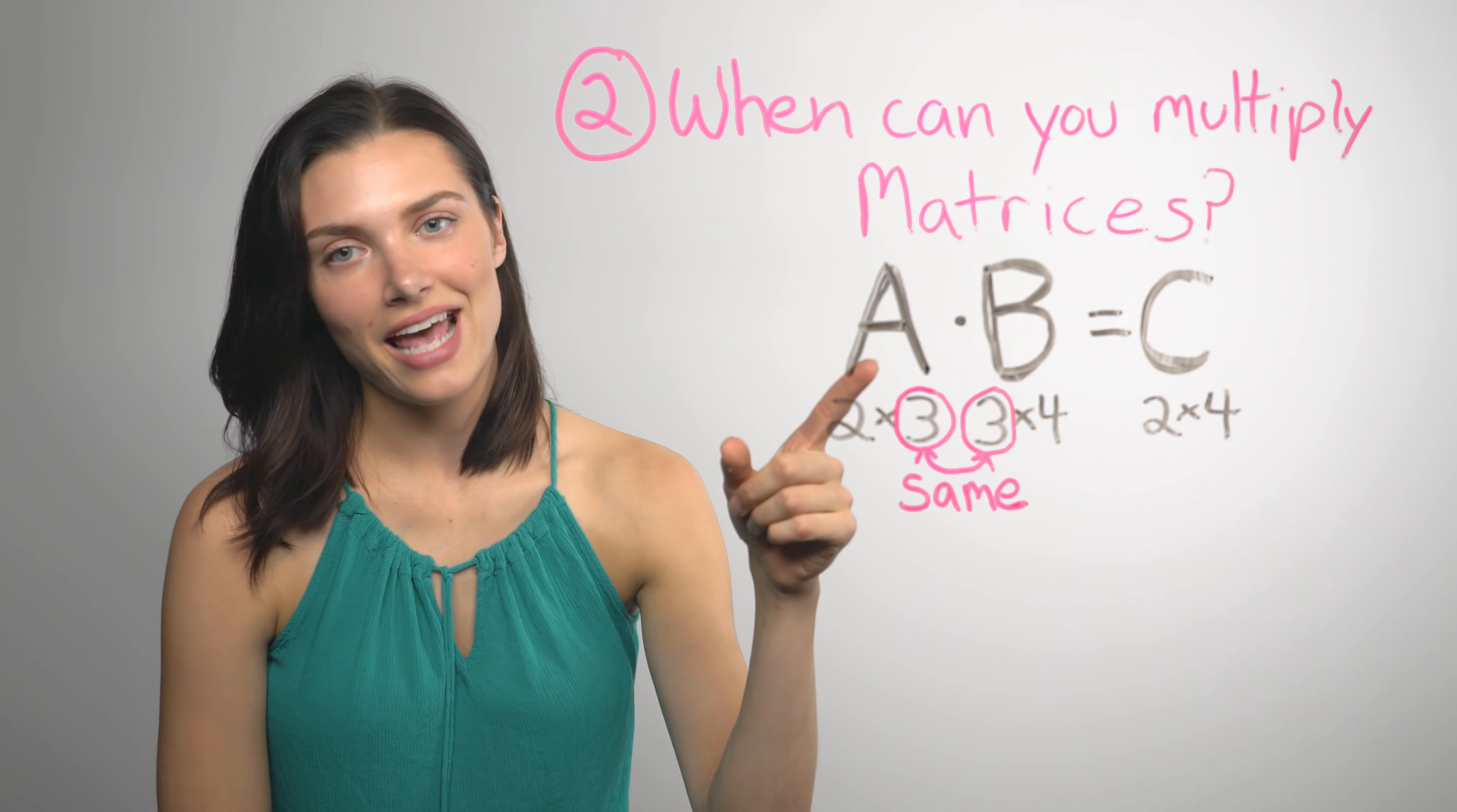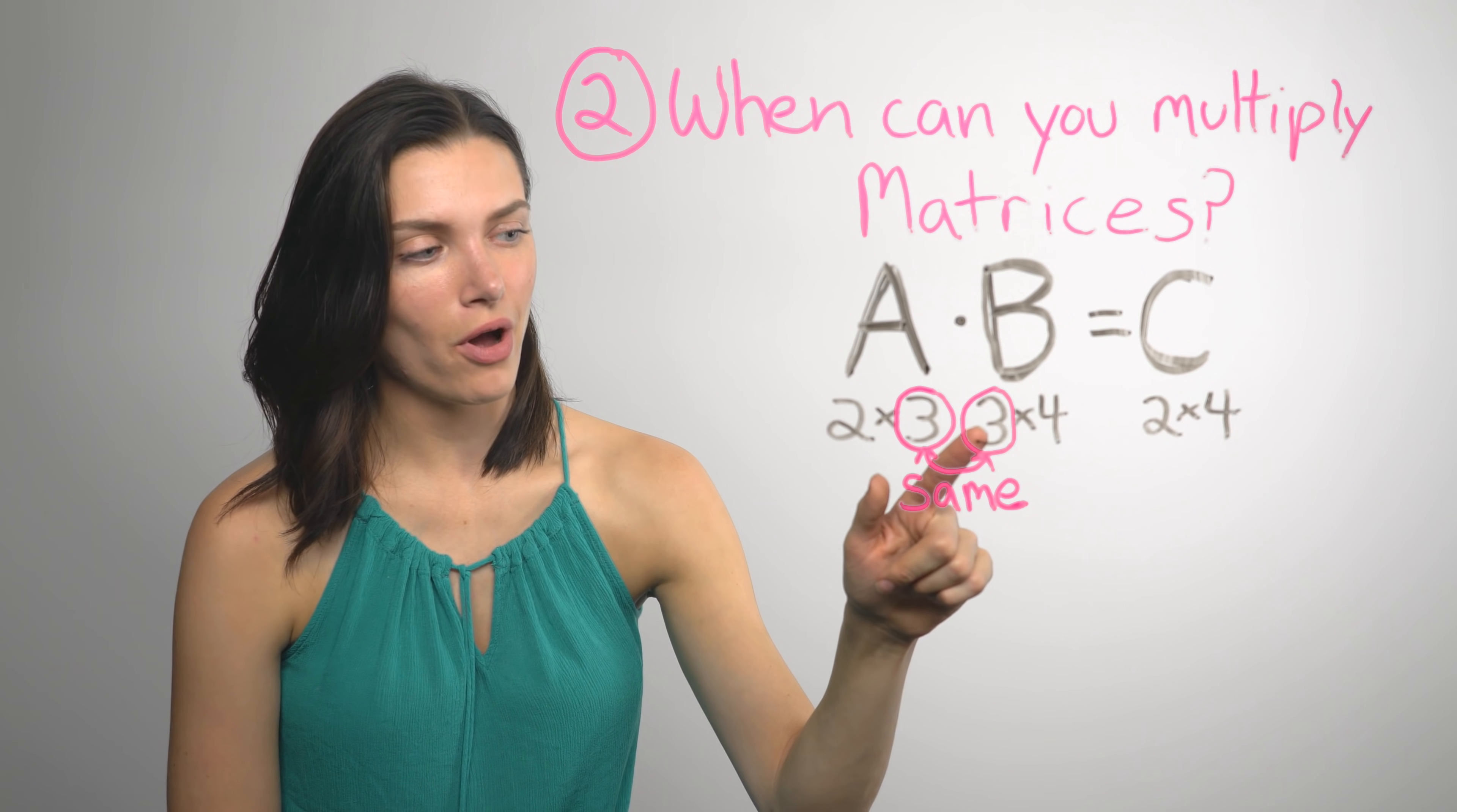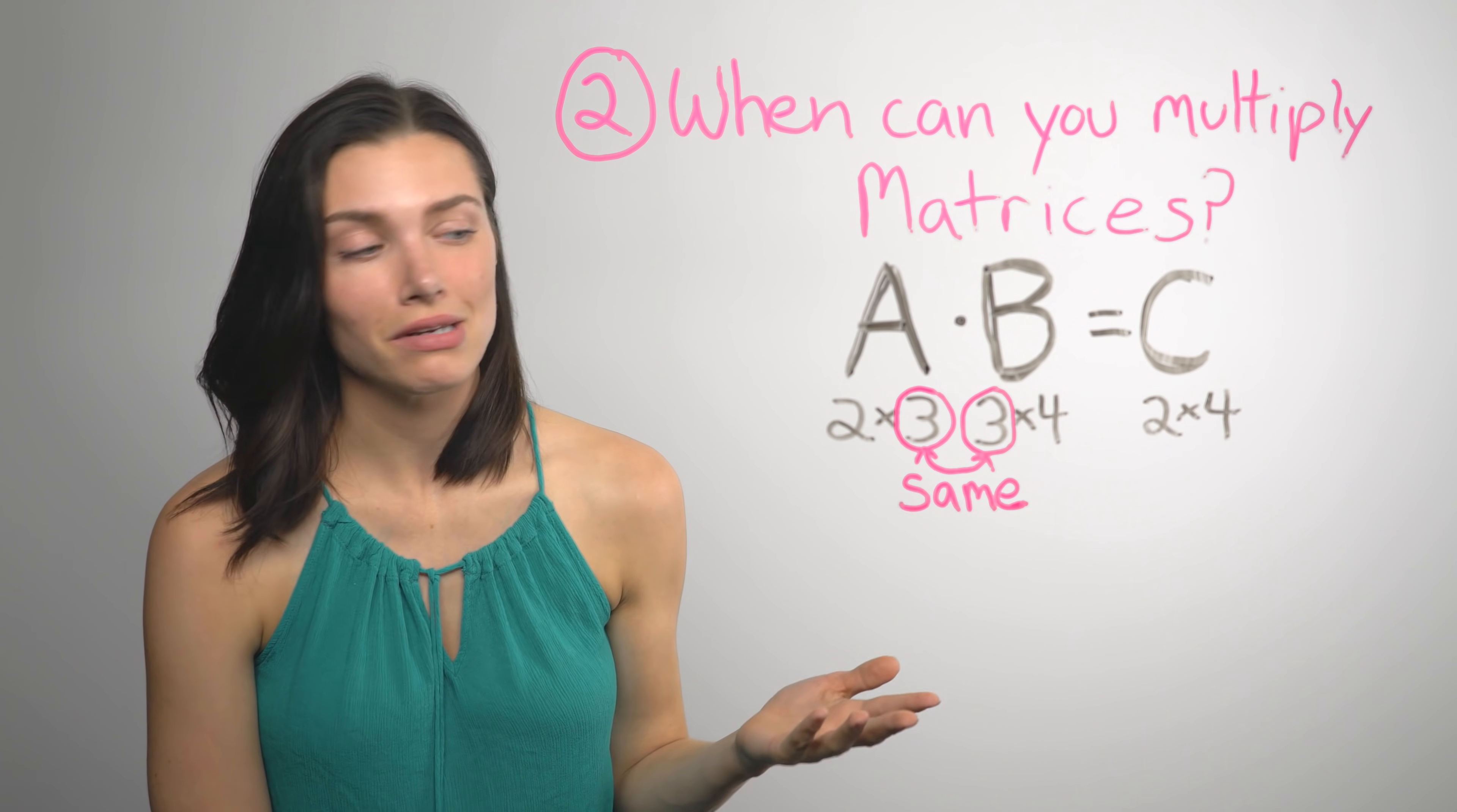So you look at the size of matrix A, see there are two rows. Remember, rows come first in the size of a matrix and three columns. In matrix B, there are three rows. So the columns in matrix A equal the rows in matrix B. So you can multiply them.